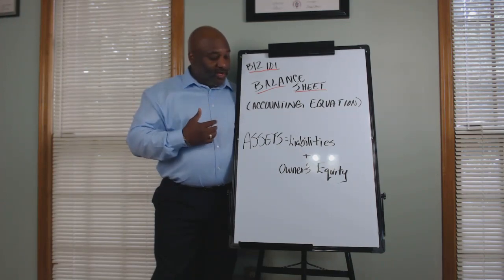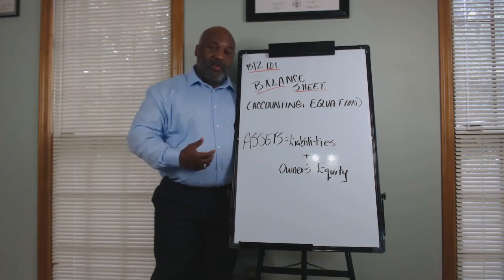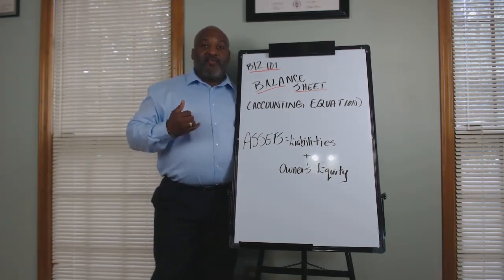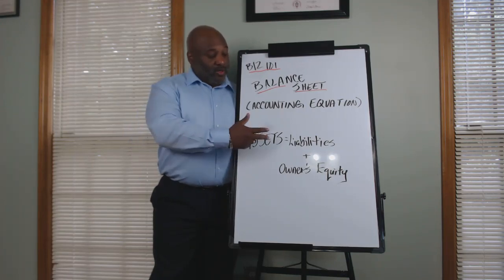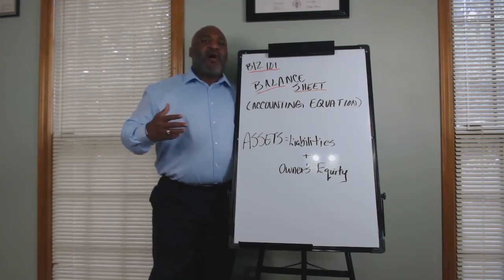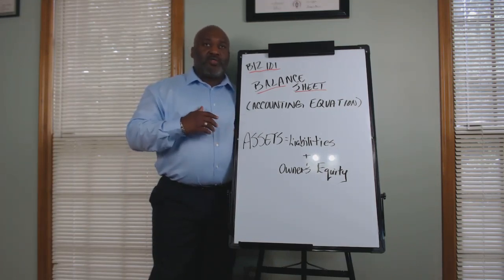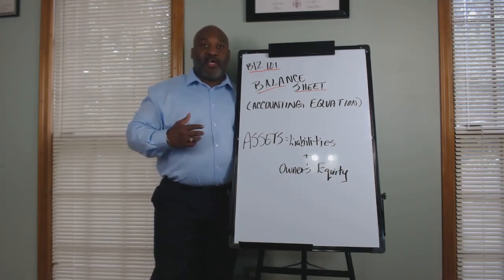Pretty much when you look at the equation, it's assets equals liability plus owner's equity. What do we look at for assets? Assets are the things that a company owns at that particular point in time — that being cash, inventory, property, those things that are owned. On the liabilities side, those are the financial obligations that a company has at a certain point in time, those being loans, credit cards, maybe lease payments. And owner's equity is the portion of ownership that the owner has in the company at that particular point in time.